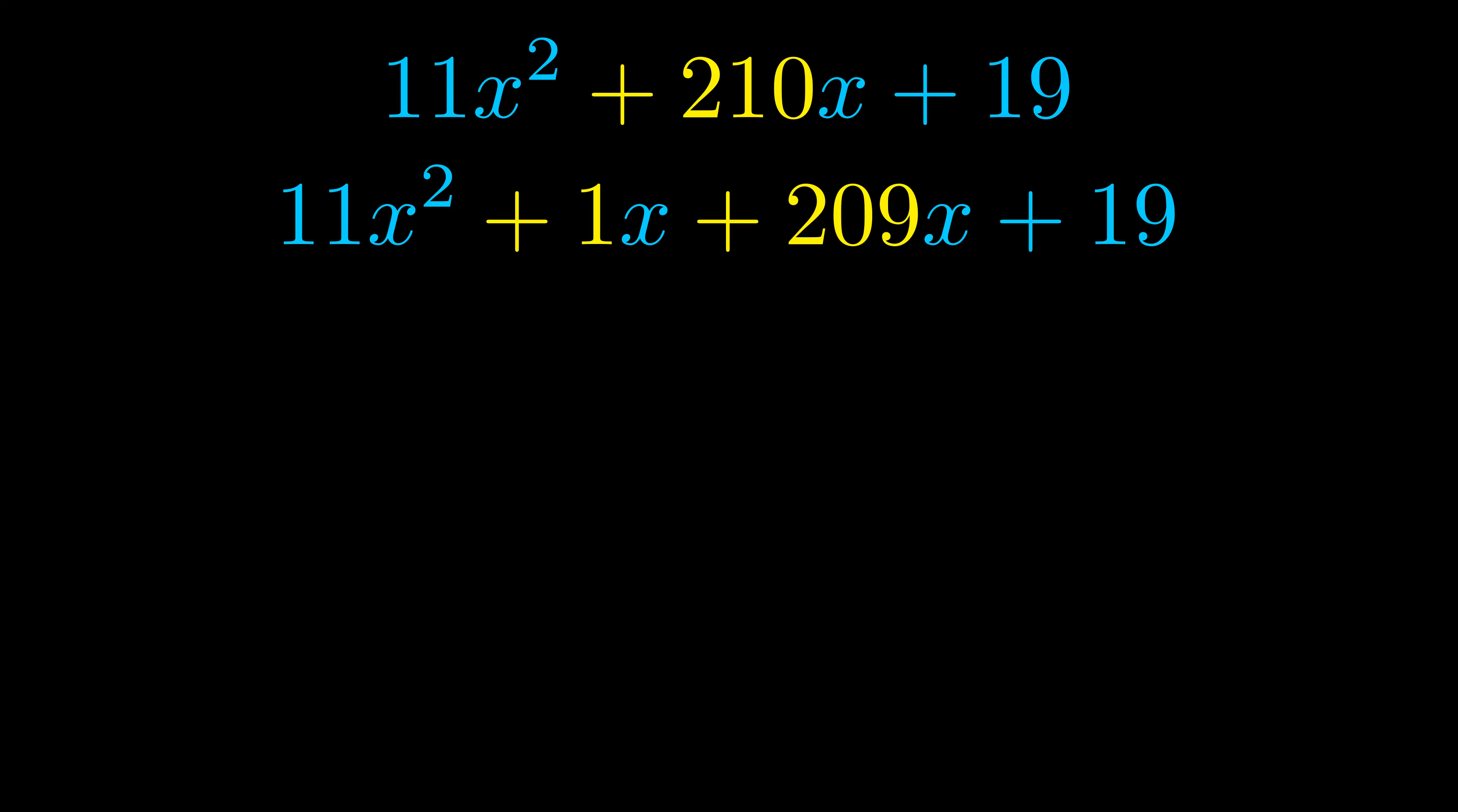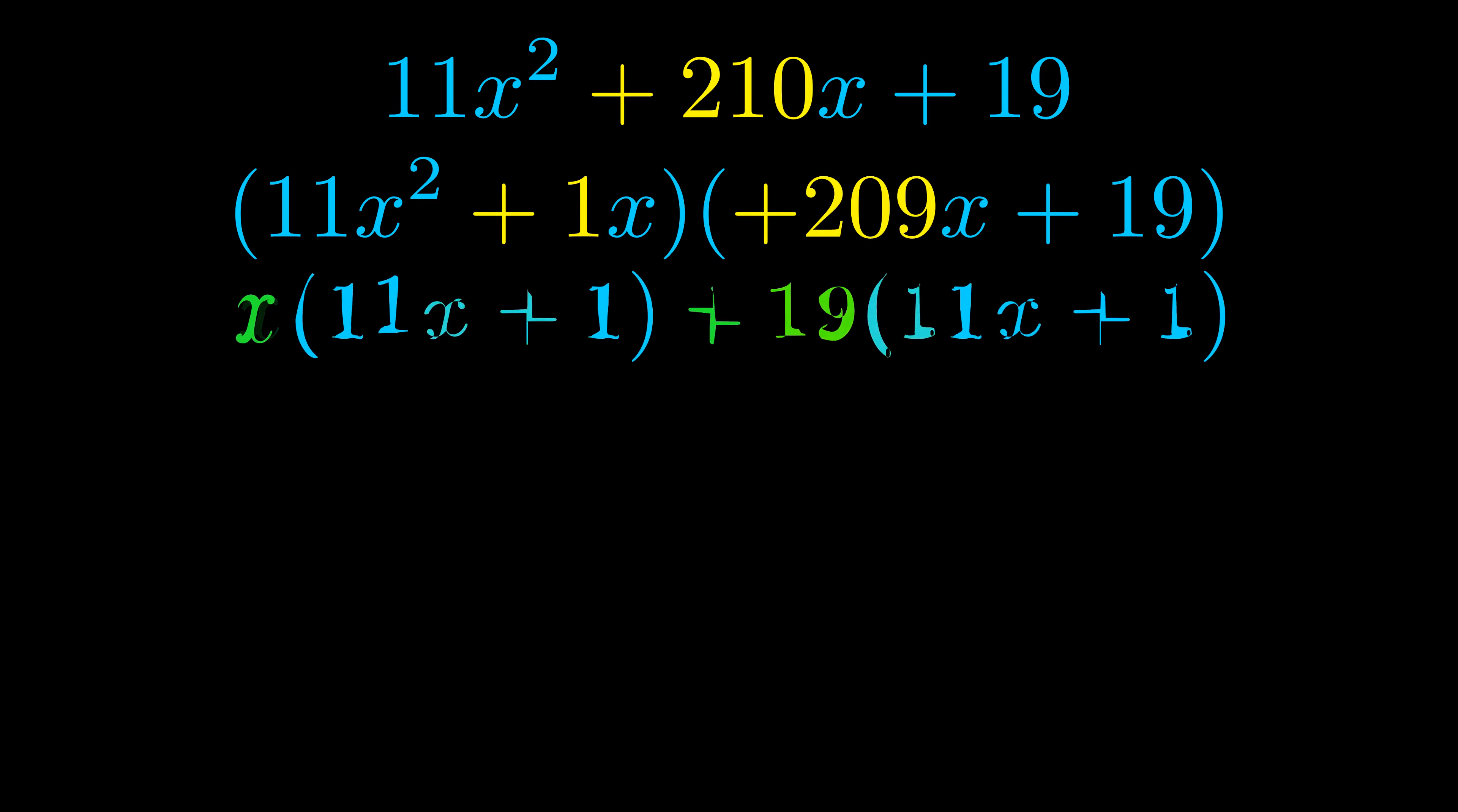Once we've done this we go ahead and put parentheses around the first term and the last term, and we do that so that we can take the greatest common factor out of both terms. We can see the greatest common factor is now outside in green.